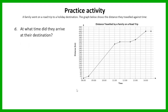The next question: at what time did they arrive at their destination? Be careful — they didn't arrive at their destination at 2:30, which is where the graph ends. They arrived at 2 o'clock, because from 2 o'clock until half past 2, their distance is remaining constant — meaning they're not moving anymore. So when they stopped moving, that is when they arrived at their destination — at 2 o'clock.